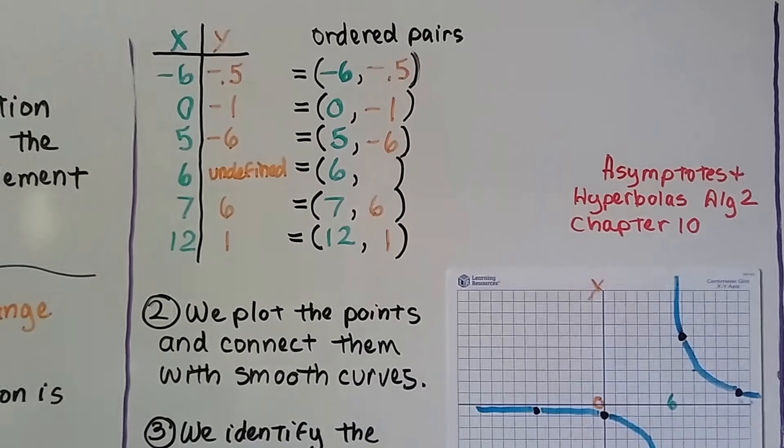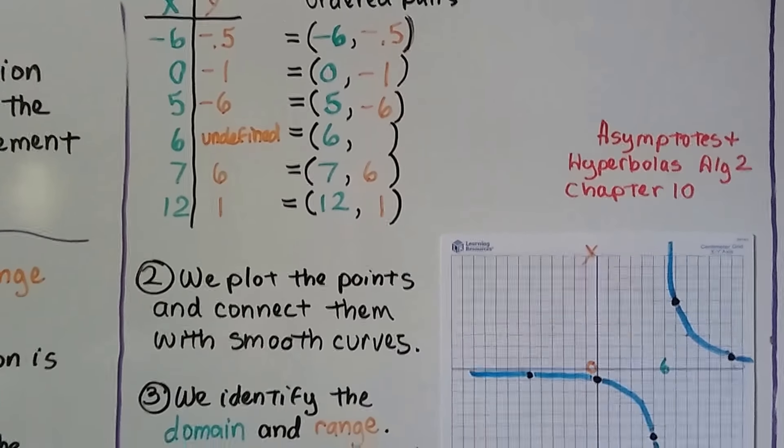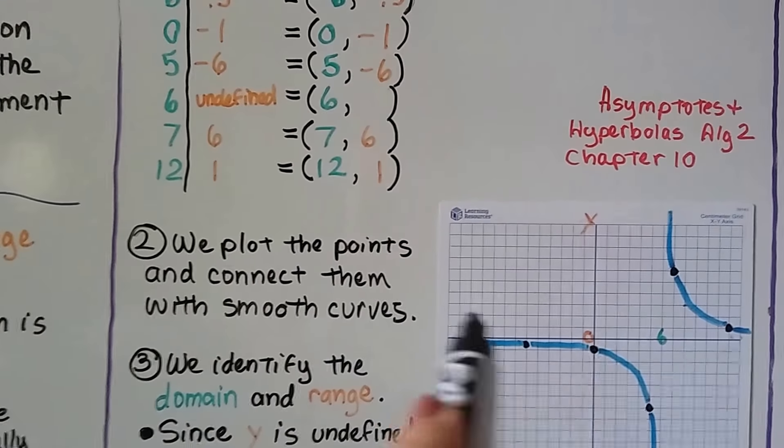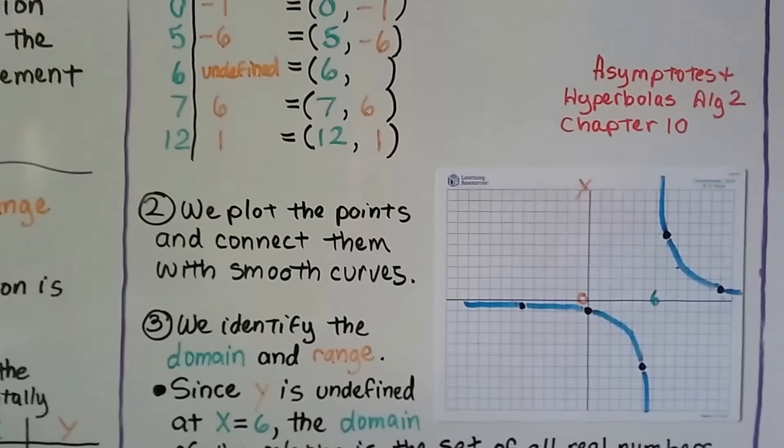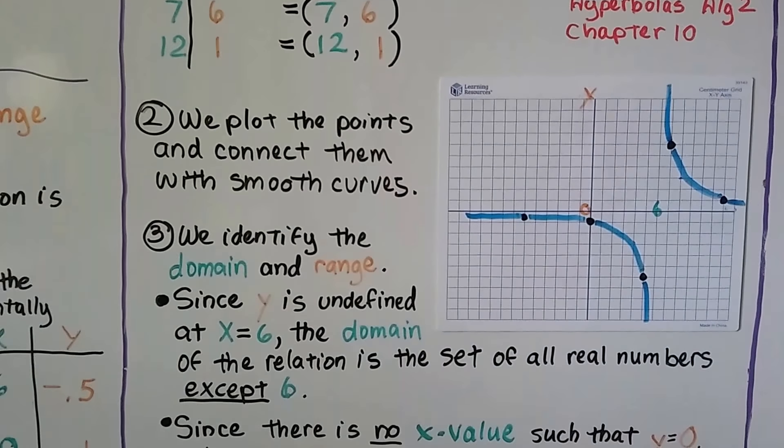And it'll talk about when x is 6 and y is 0 and what's happening here. These are hyperbolas because the lines are curving. So we plot each of these points and connect them with smooth curves.